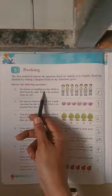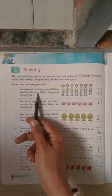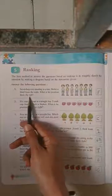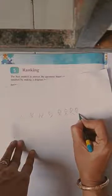Answer the following questions. Number 1: 7 boys are standing in a line. Mohit is 3rd from the right. What is his position from the left? We have to draw 7 boys roughly: 1, 2, 3, 4, 5, 6, 7 boys.